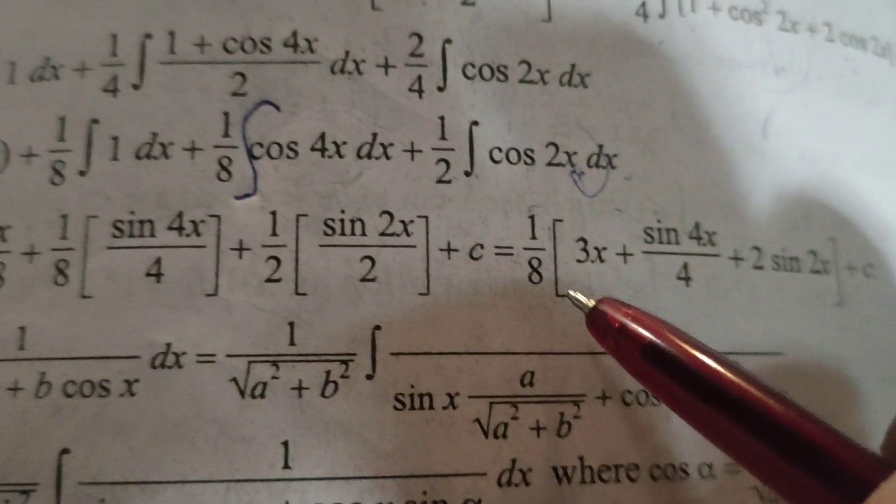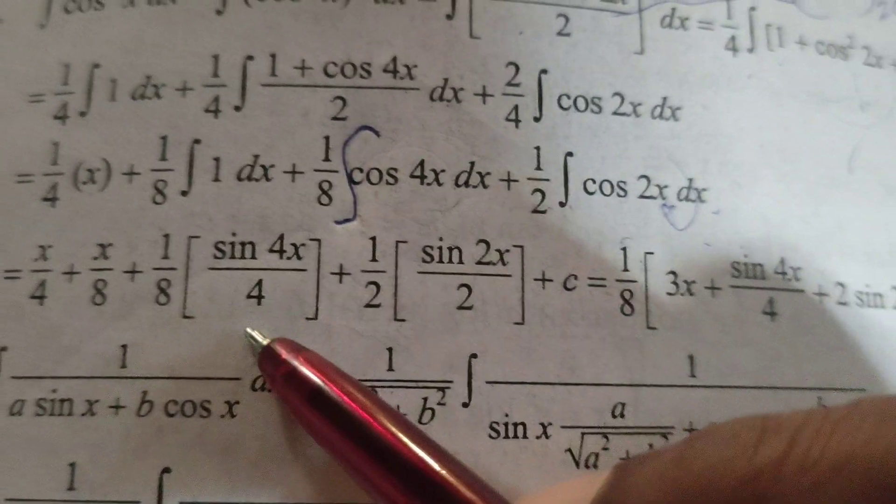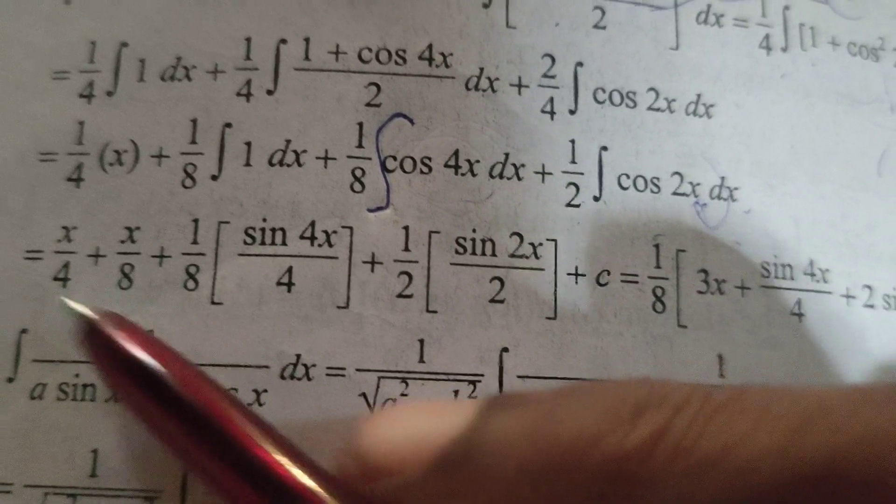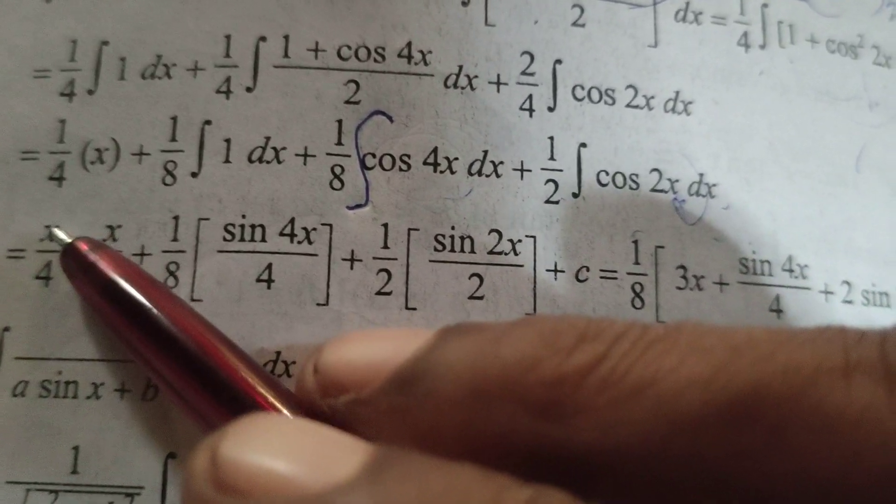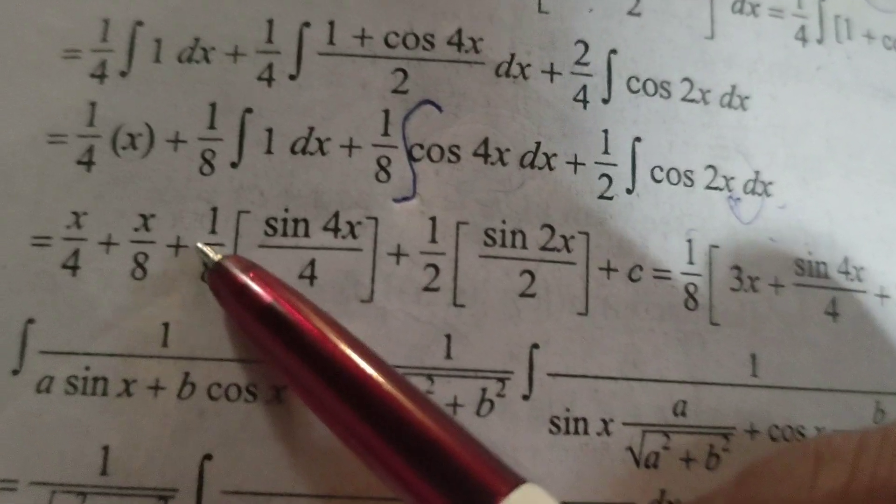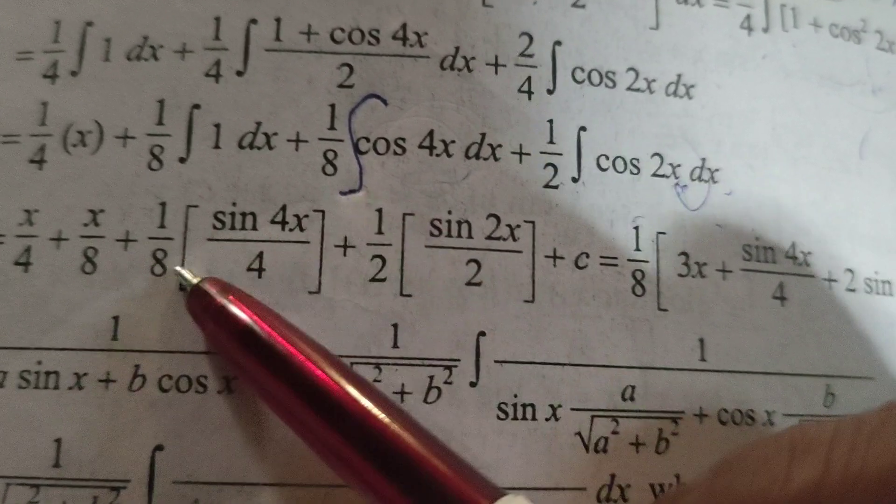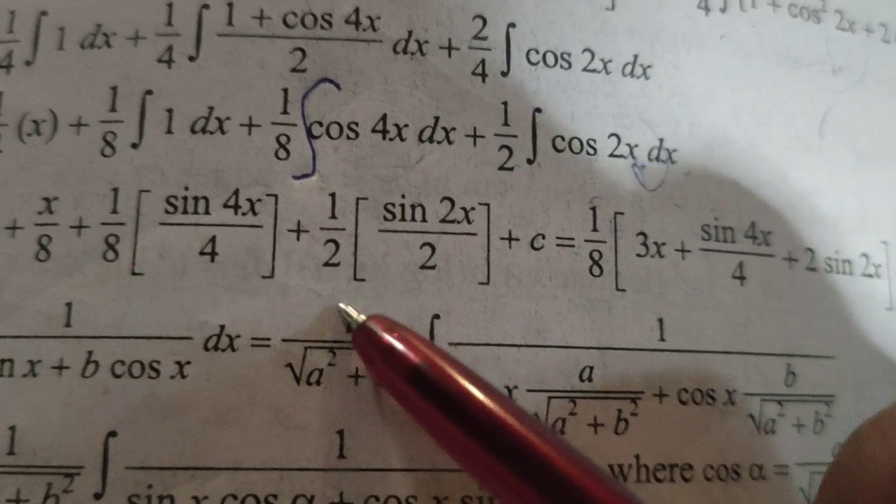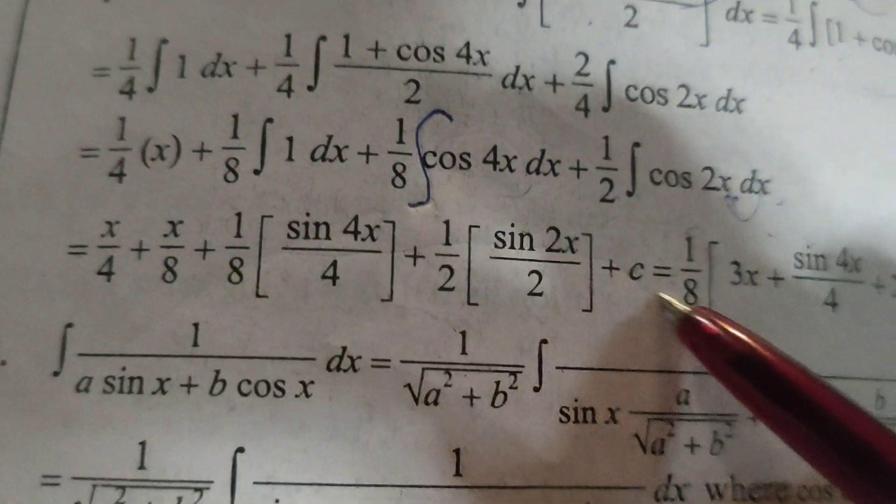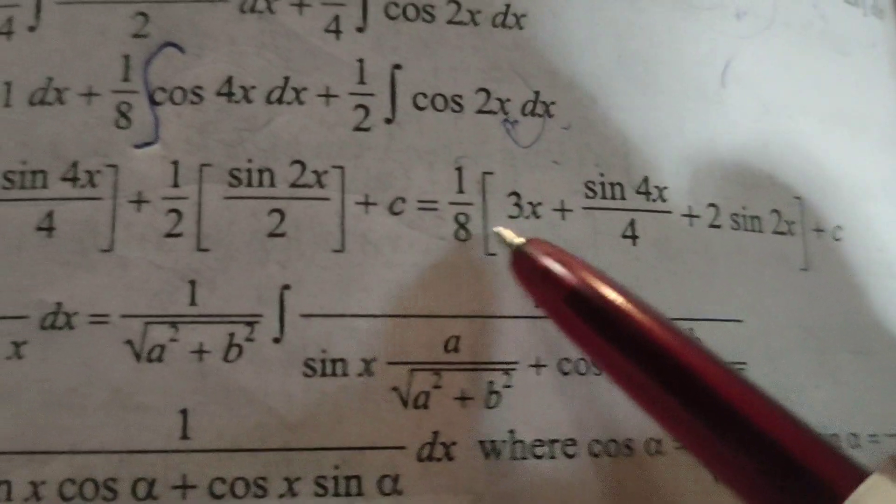Here simplify this. 1 by 8 into this is 3x. LCM here is 8. 4, 2's are 8. 2x plus x equals 3x by 8. Here already 8 is there and here also 4. Now in this total whole term,